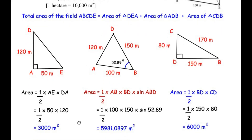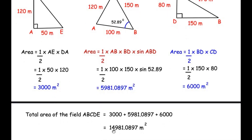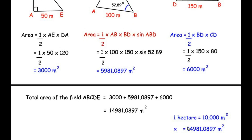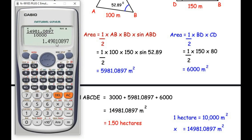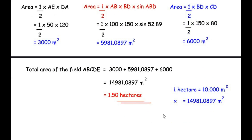Adding all three areas together: 3000 plus 5981.0897 plus 6000 gives a total area of 14981.0897 square meters. Converting to hectares by dividing by 10,000 gives 1.4981 hectares, which rounded to one decimal place is 1.50 hectares. This is the total area of the given field.